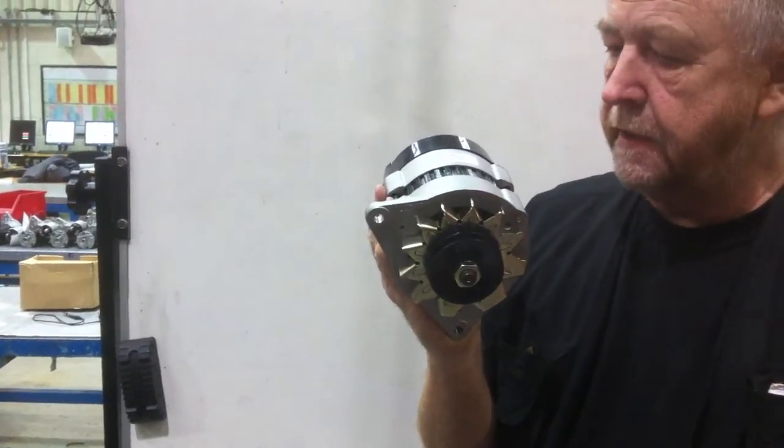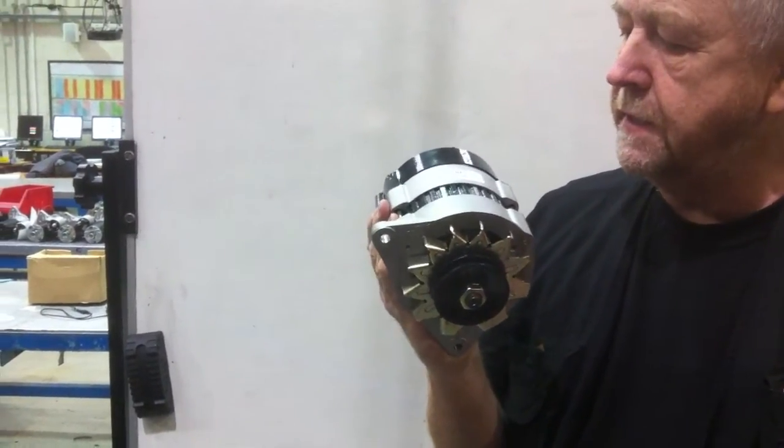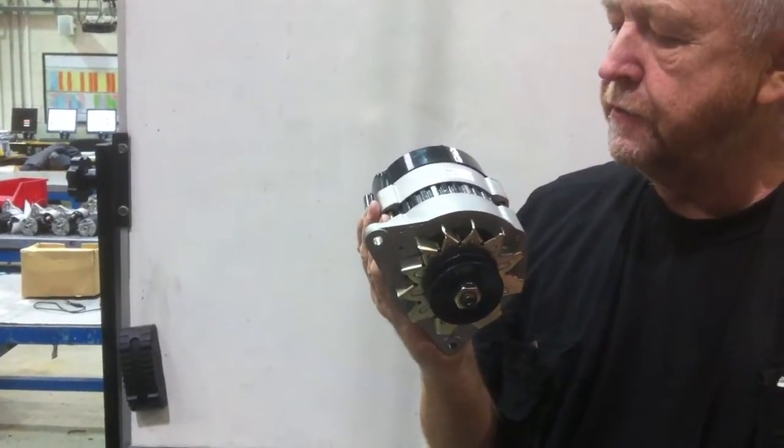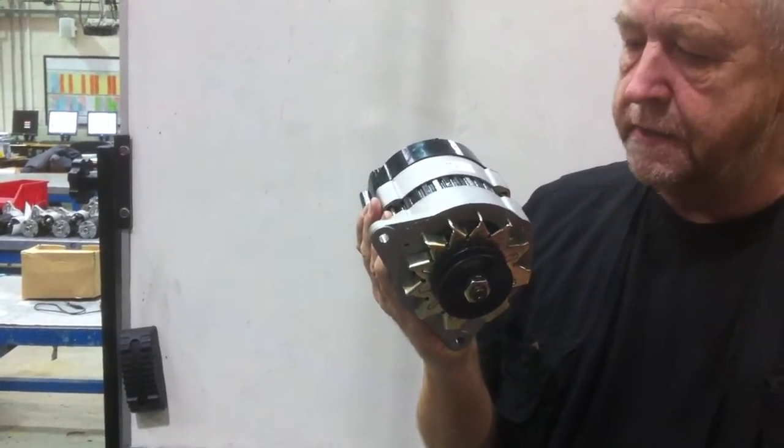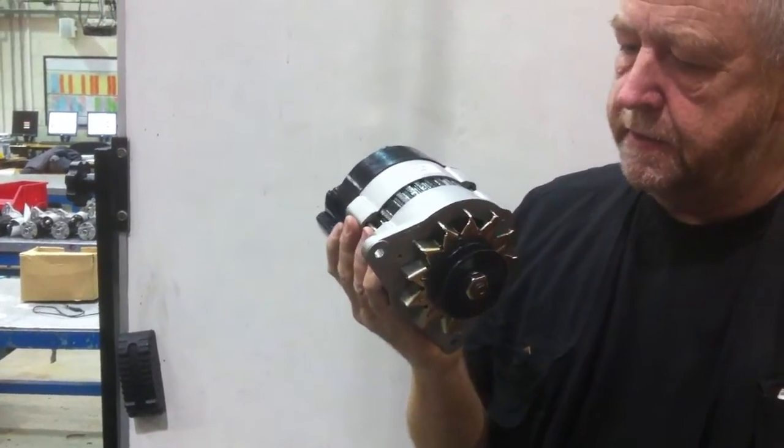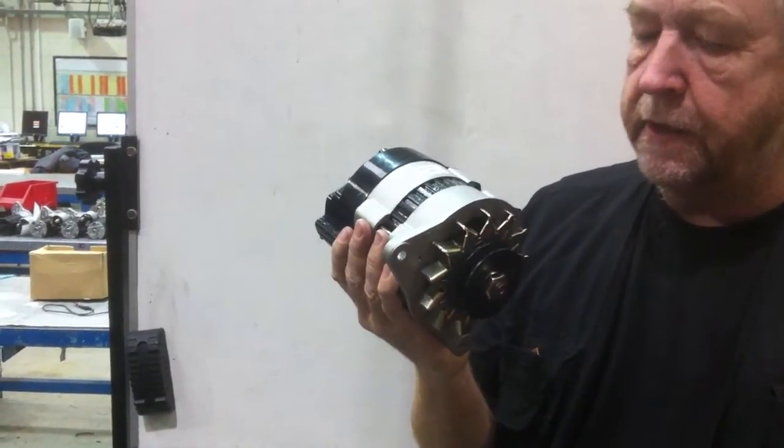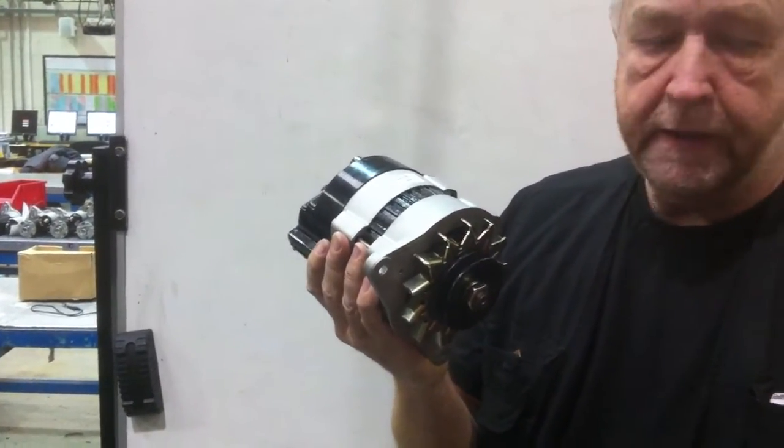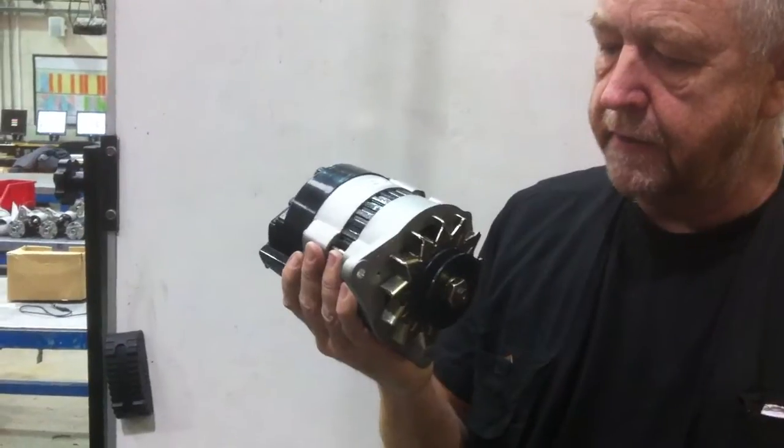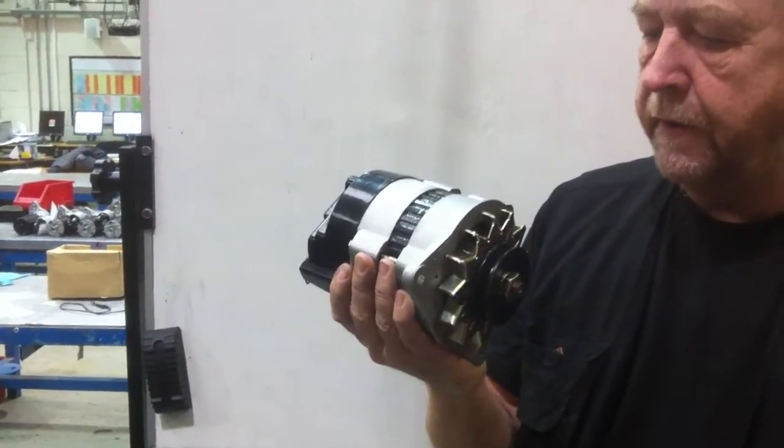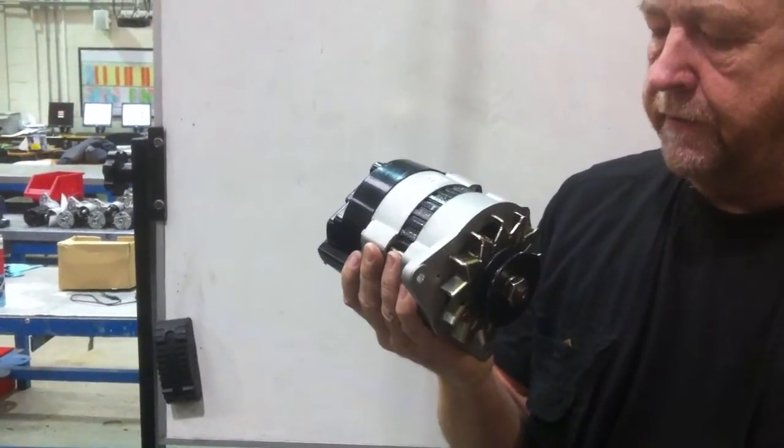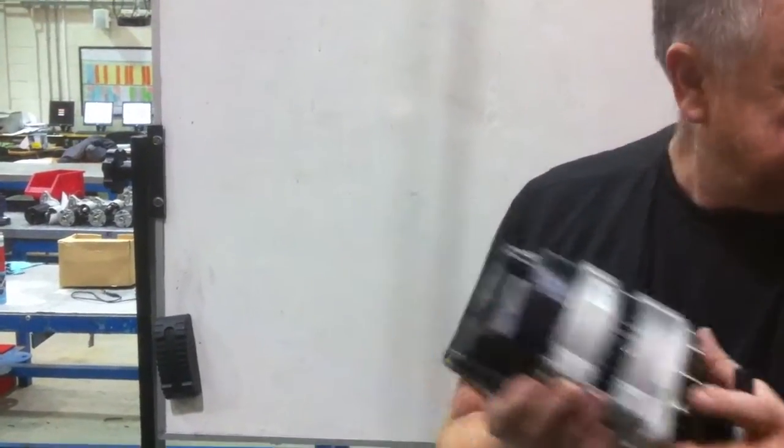We're going to examine a Lucas alternator, people know them as the Lucas ACR. This is an LRA100, 12V 45A alternator, and it's quite a simple one. It has a 9 diode rectifier and a built-in solid state voltage regulator, very simple, very reliable, and a grand output from it. So we're just going to examine how it works.